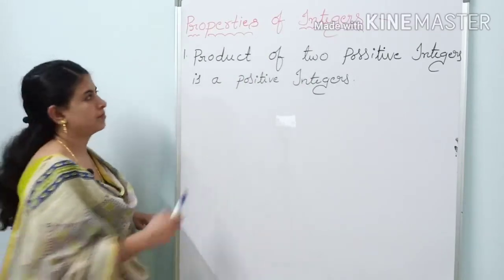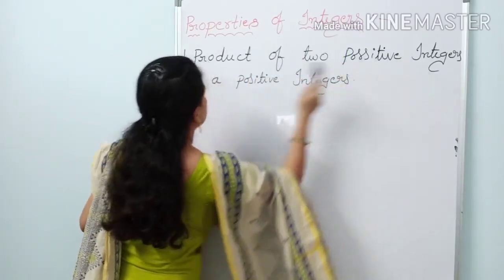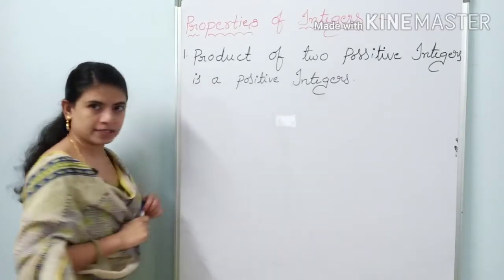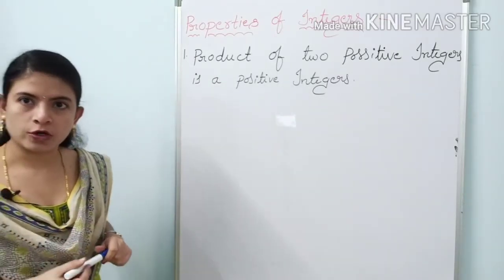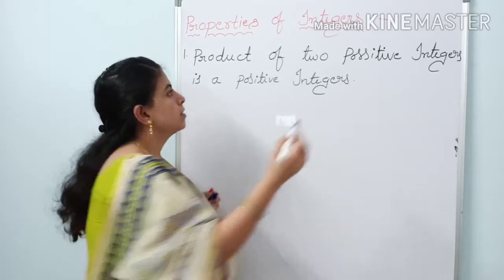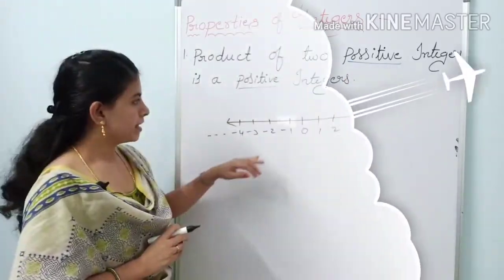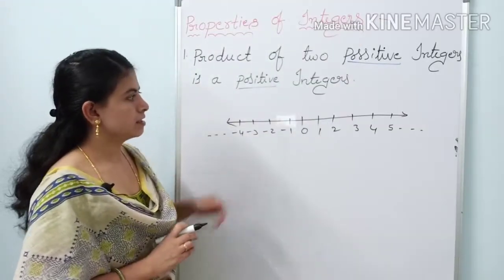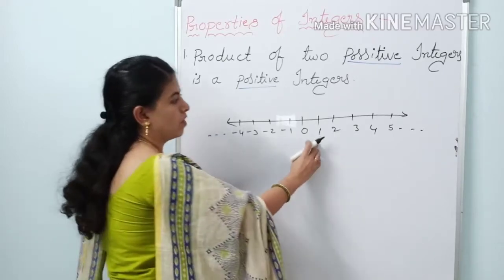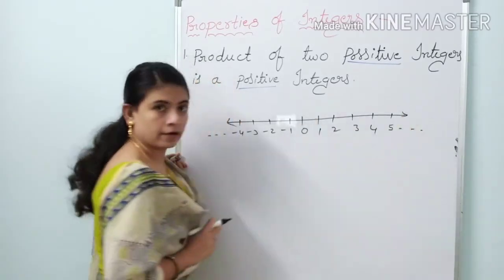First property: the product of two positive integers is a positive integer. In the integer set, positive numbers are 1, 2, 3, 4, 5 and so on.